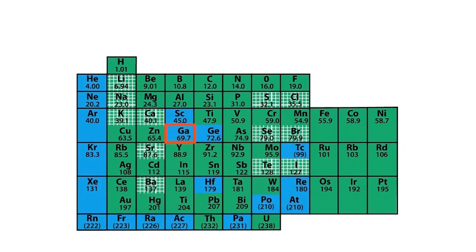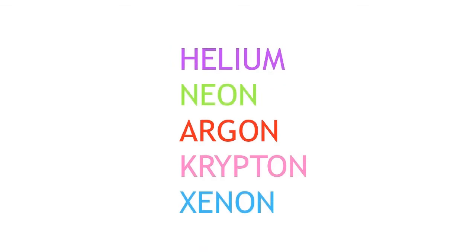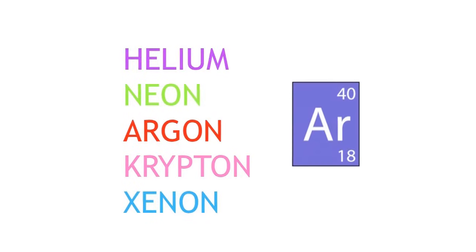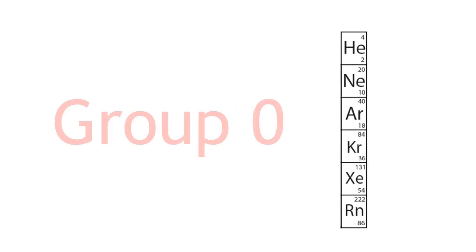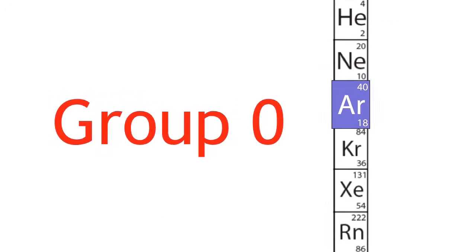There were still a few problems with Mendeleev's periodic table. When Mendeleev began drawing up the periodic table, the noble gases hadn't been discovered yet. When argon was discovered, it didn't fit into Mendeleev's table. It was put into a new group, Group Zero, and over the next few years, other members of this group were discovered.